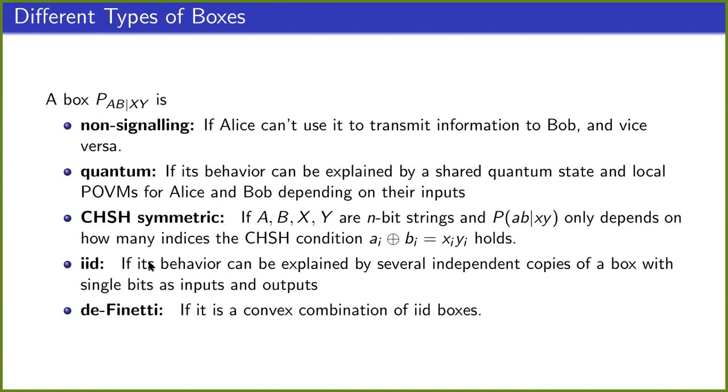And what will also be important are IID and de Finetti boxes. So IID boxes are just a box which consists of a single round box repeated n times over and over again, and the individual boxes are uncorrelated between each other. And the de Finetti box is just a convex combination of IID boxes.